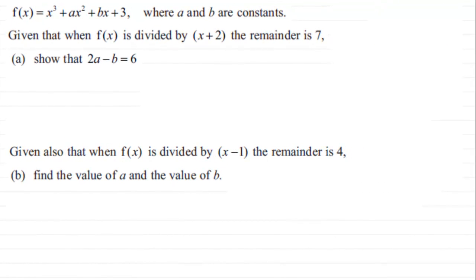Hi, now here we have an example on the remainder theorem. If you're not sure about the remainder theorem, just go on my website examsolutions.net where there's some tutorials on that. But what we've got here is that f of x equals x cubed plus ax squared plus bx plus 3, where a and b are constants.